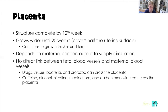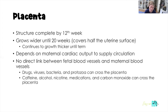The placenta is structurally complete by 12 weeks. It grows wider until about 20 weeks, covering about half of the uterine surface, and then gets thicker as the baby needs more nutrients for growth. Blood flow through the placenta is completely dependent on mom's cardiac output. If anything is diminishing her cardiac output, you are diminishing blood flow through the placenta — and that's how the baby gets nutrients for growth and oxygen for survival.